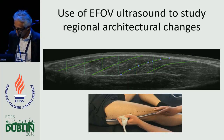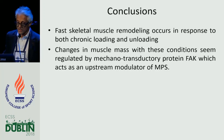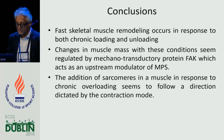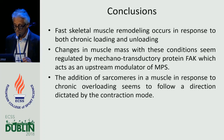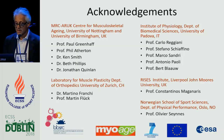To summarize: skeletal muscle shows a fast remodeling response to both chronic loading and unloading. Changes in muscle mass are regulated by mechanotransductory proteins such as focal adhesion kinase, which acts as an upstream modulator of protein synthesis. The addition of sarcomeres in response to chronic overloading follows a timeline dictated by contraction mode, and distinct signaling pathways control differential muscle growth activated by concentric and eccentric loading. I'd like to thank all colleagues that collaborated to these findings in Derby, Zurich, Padua, and Oslo.